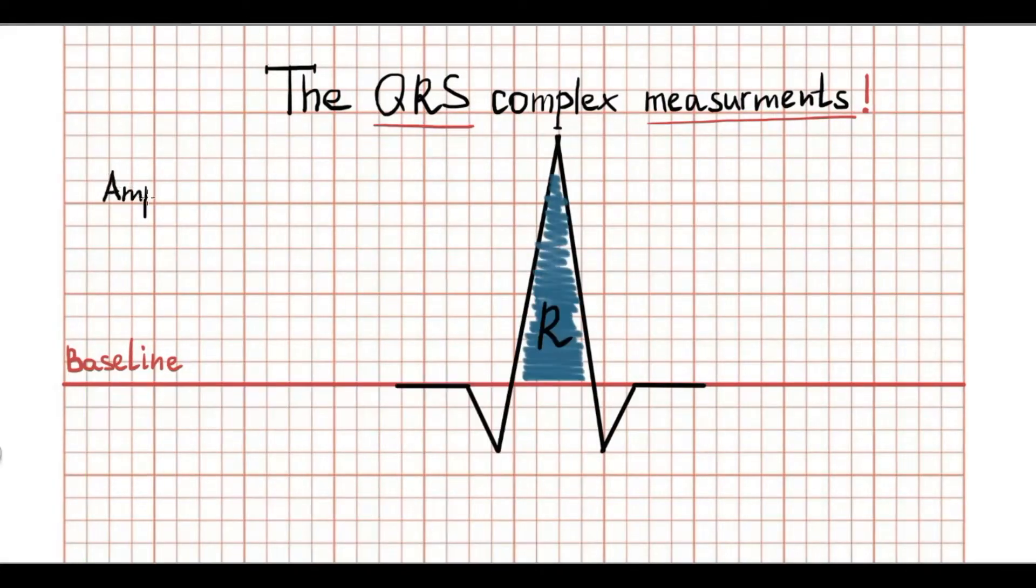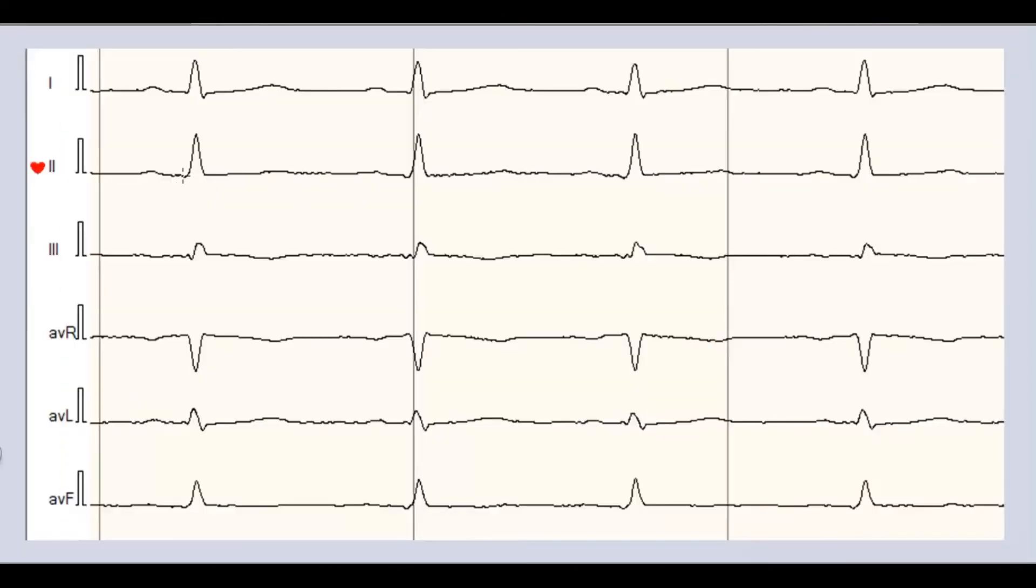The R wave is depolarization of ventricular main mass. In standard leads, R wave amplitude depends on mean QRS axis. If the mean QRS axis is normal, the maximal R wave is located in second standard lead and biphasic complex is in AVL.